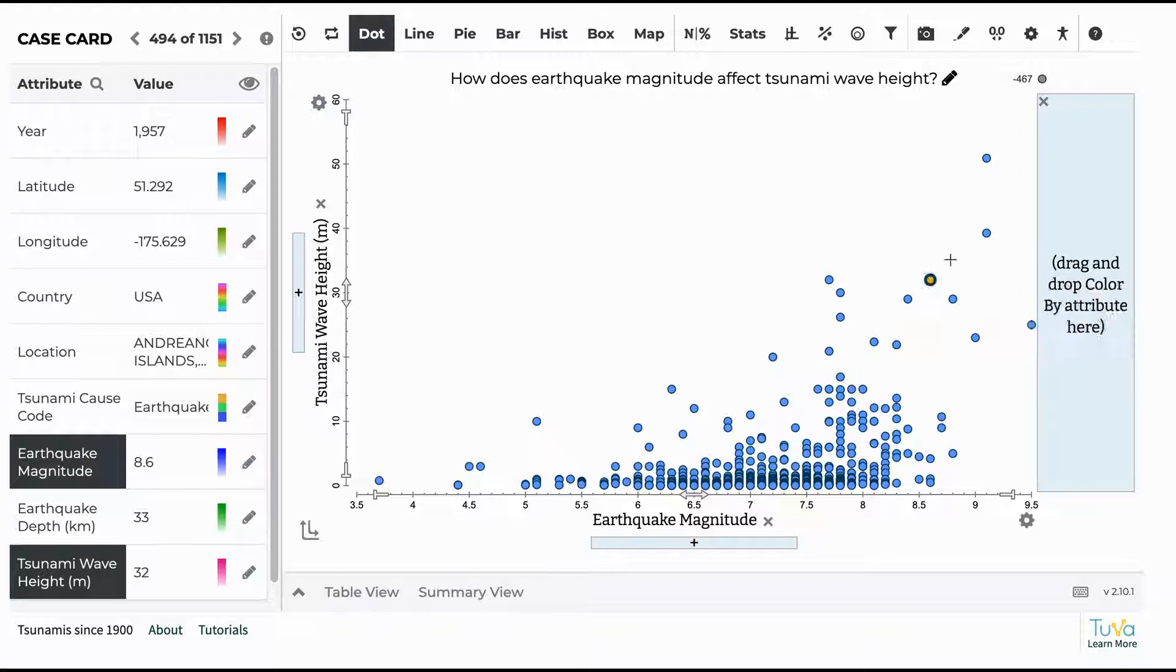But in general, what they'll want to notice is the larger tsunamis are happening with higher magnitude earthquakes, and that the low magnitude earthquakes generate much smaller wave heights in general. It also means that some of the high magnitude earthquakes also have some low wave heights.